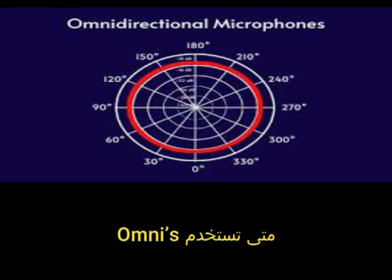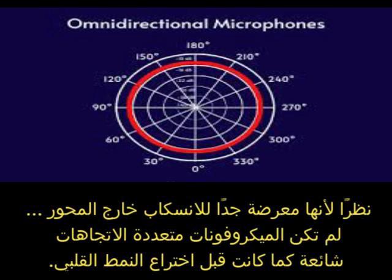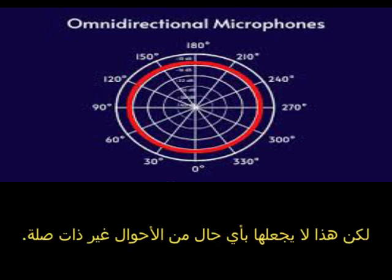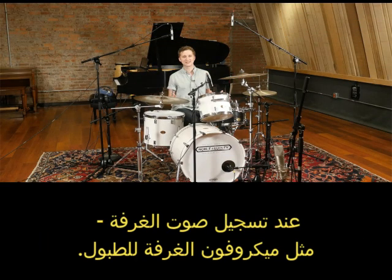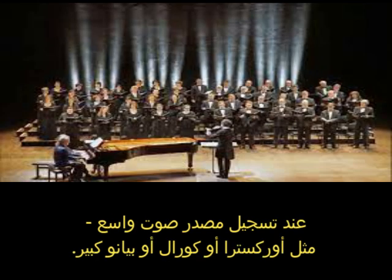Because they are prone to off-axis spill, omnidirectional mics aren't nearly as popular as they were prior to the invention of the cardioid pattern — but that doesn't make them irrelevant. Common situations when omnis are preferable include: recording the sound of the room, such as with room mics for drums; recording a wide sound source such as an orchestra, choir, or grand piano.